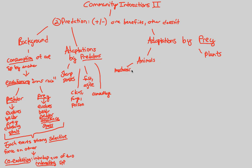They also have chemical defenses. Mechanical defenses are things like sharp quills or shells. Chemical would be things like poison. Animals also have the ability to flee — to run or hide from predators. That's another adaptation. So they can chemically avoid the predator, they can mechanically avoid, or they can flee.